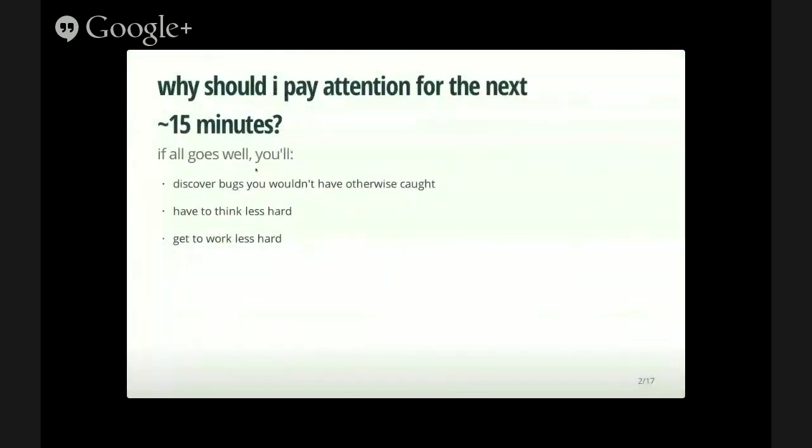So why should you pay attention for the next 15 or so minutes? If all goes well, you will discover bugs when you're otherwise caught. And this is where I think property-based testing really shines. The fact that you can actually discover bugs that you wouldn't expect, have much more robust test coverage than you otherwise would. You also have to think less hard, at least if you think it's hard to enumerate all of the cases you might have to cover. And you also have to work less hard, but I think in a more interesting way. You can think more creatively about what the functions are actually doing, rather than trying to exhaustively cover all of the cases you're possibly having, which is really easy to forget cases.